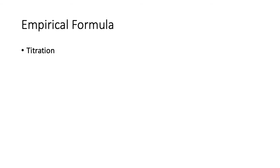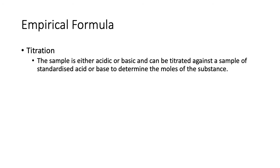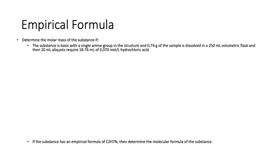Then we can deal with titration to get your molar mass. So the sample is either acidic or basic and then is titrated against the sample of standardized acid to basically determine the number of moles of substance. Let's have a look. A substance is basic with a single amine group. So the single amine group means that it will have one amine and accept one proton. Because it accepts one proton, it just means it has a one-to-one ratio with the acid.